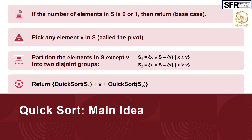The main idea behind quicksort involves four steps. First, we have to check the number of elements — if the number of elements is 0 or 1, we can stop the process. Next, we have to choose a pivot element; this is an important step and there are a number of methods to choose it. Then, the given list should be divided into two disjoint groups: elements less than the pivot are kept on one side, S1, and elements greater than the pivot are kept on the other side, S2.